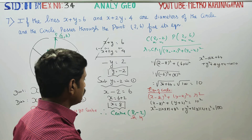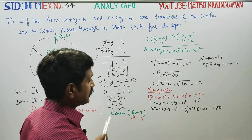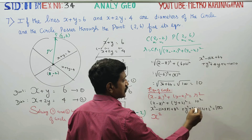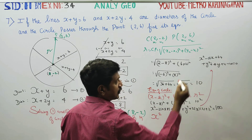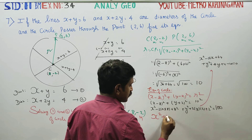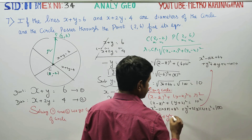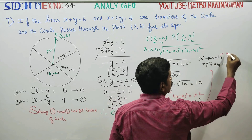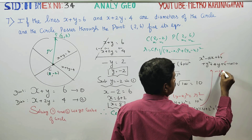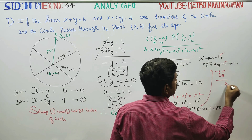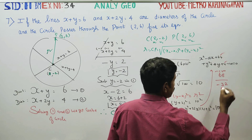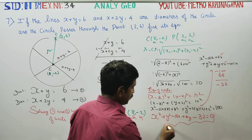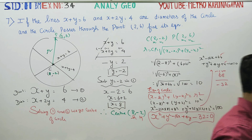Simplifying the equation, we get x squared plus y squared minus 16x plus 4y plus 64 plus 4 minus 100 equals 0, which gives x squared plus y squared minus 16x plus 4y minus 32 equals 0. This is the equation of the circle. Thank you!